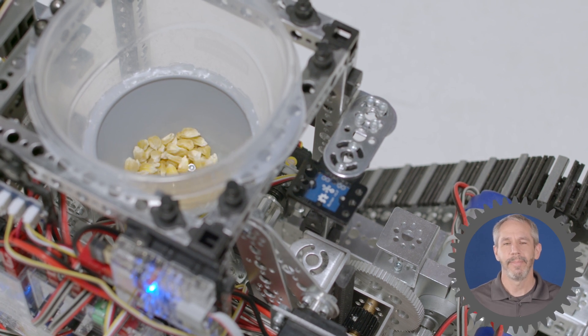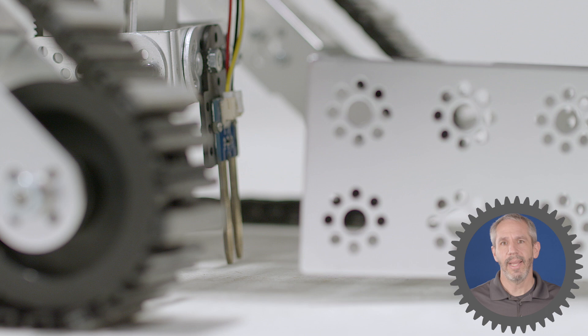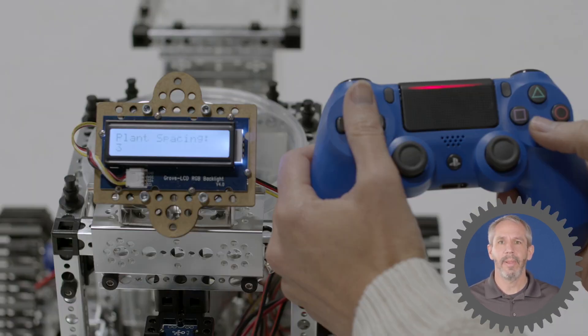Why does all this matter? On CropBot, the encoders let me set the precise distance between corn kernels as they're being planted.